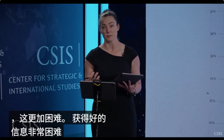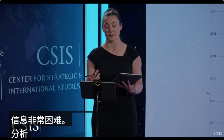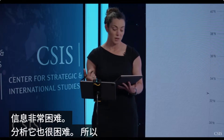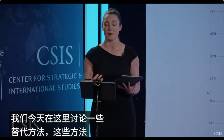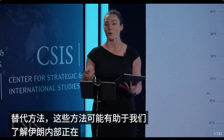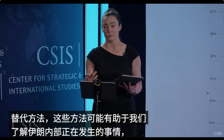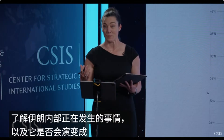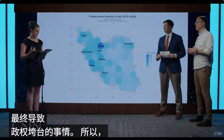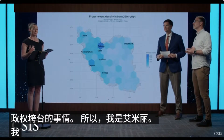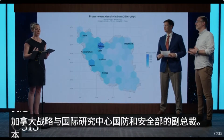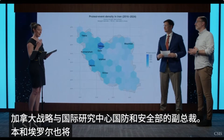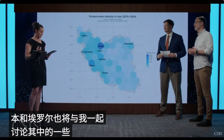Getting good information out is very difficult. Analyzing it is also very difficult. So we're here today to talk about some alternative methods that might help us identify what's going on inside Iran, whether it might turn into something that could eventually lead to the downfall of the regime. I'm Emily, the vice president of the Defense and Security Department here at CSIS, and I have with me Ben and Errol, who are going to talk through some of these methods.